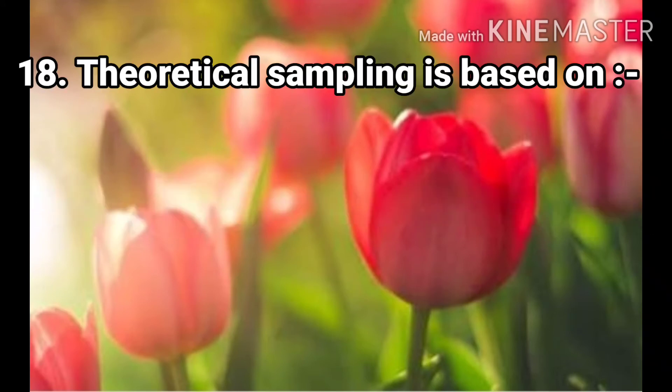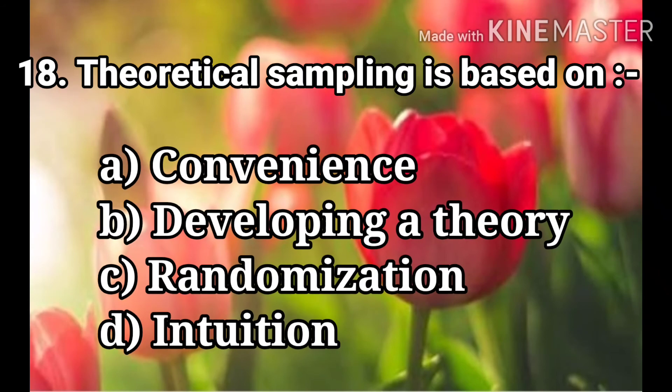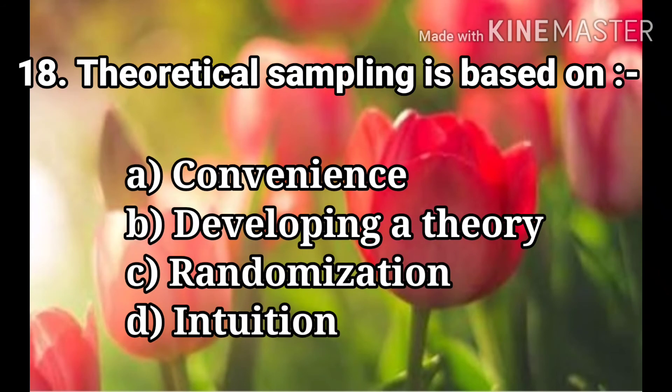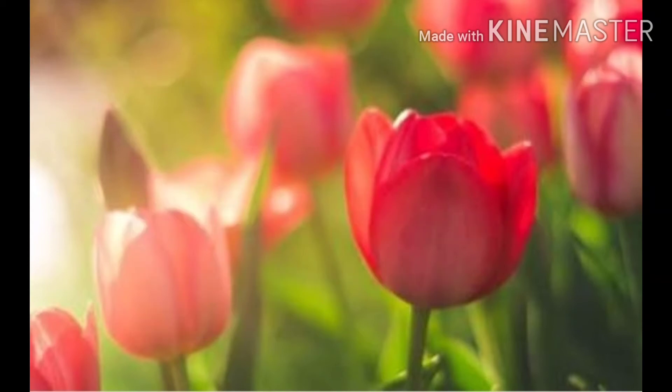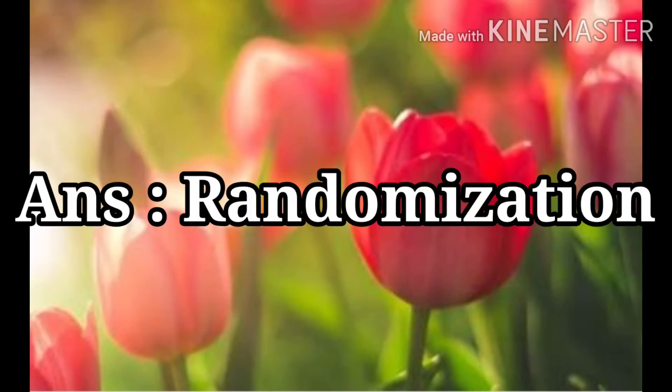Question 18: Theoretical sampling is based on. The options are Convenience, Developing a Theory, Randomization, and Induction. The answer is Randomization.